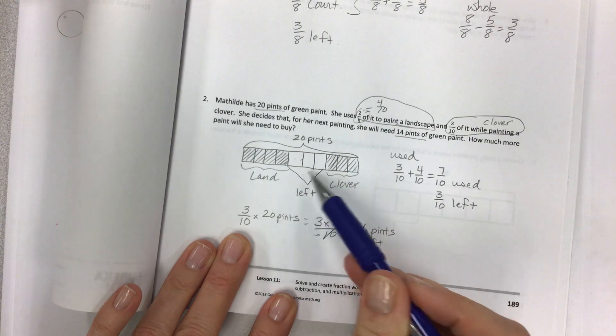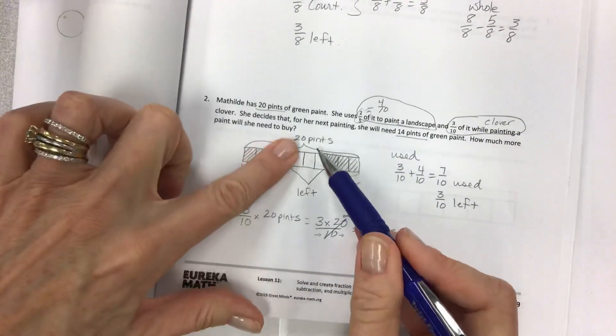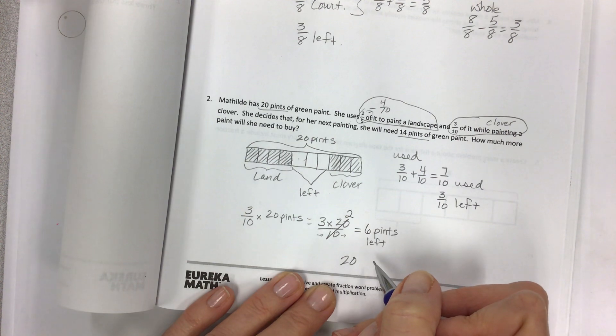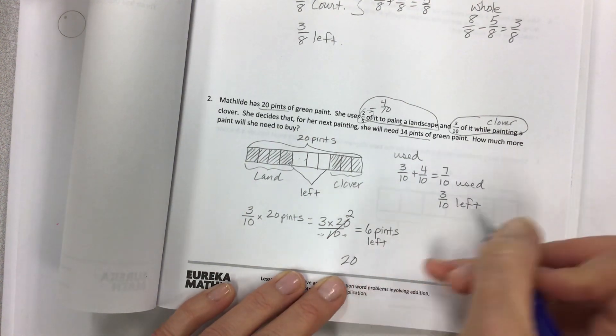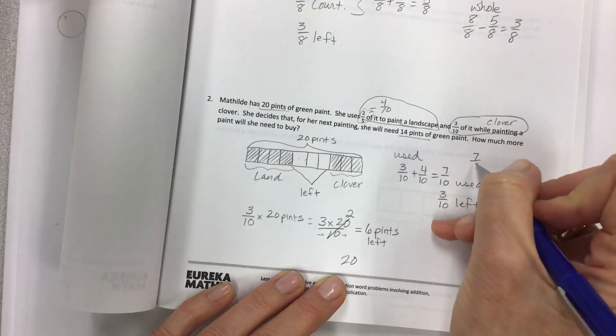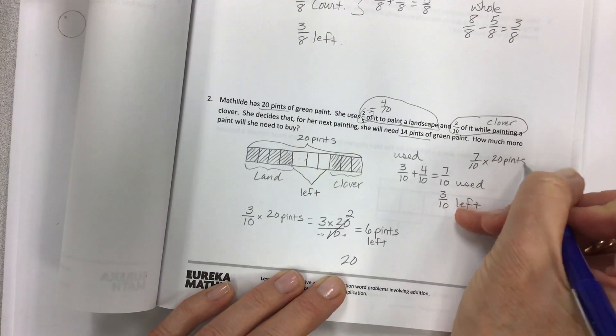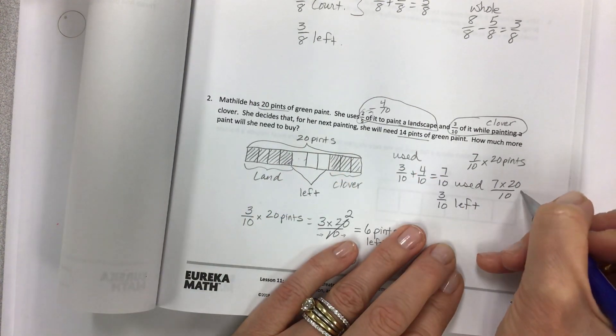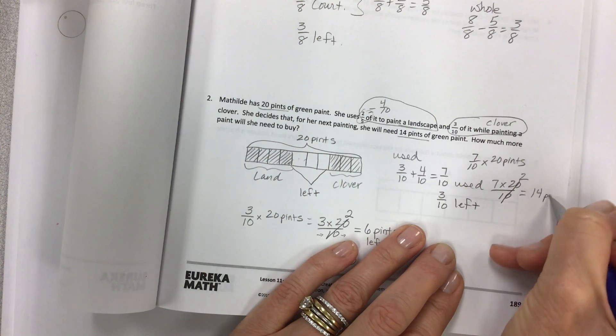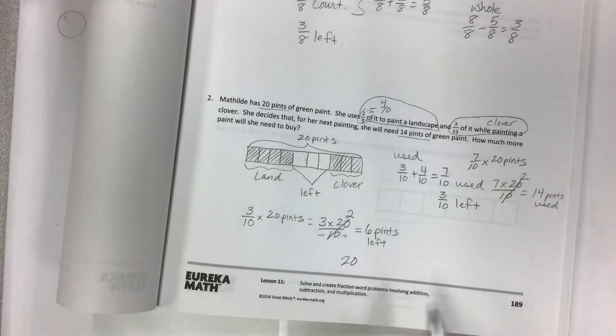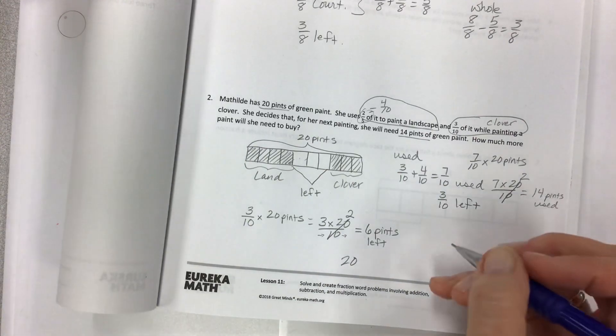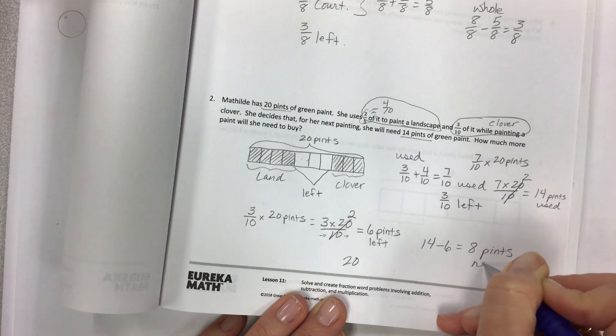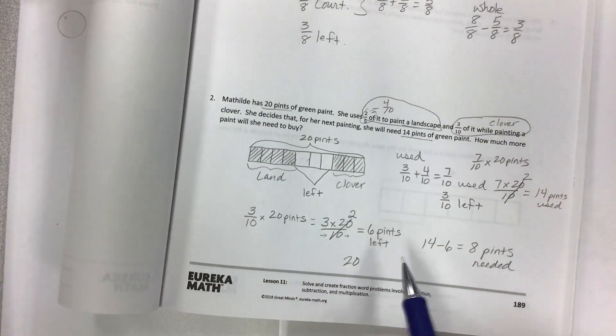So let's make this three times 20 over 10. Remember yesterday's strategy was use the commutative property, move that denominator over, change it to 20 tenths, which makes this a two, and get six pints left. So I have three tenths left, which is six pints out of the 20.